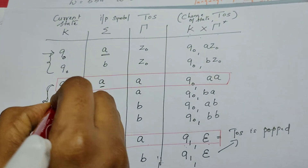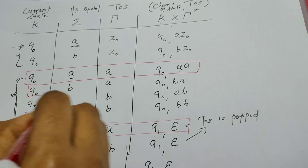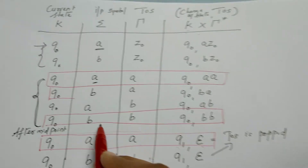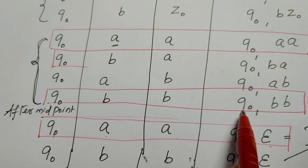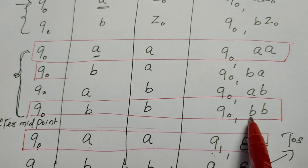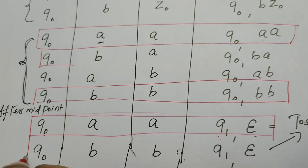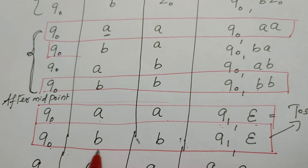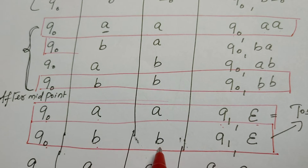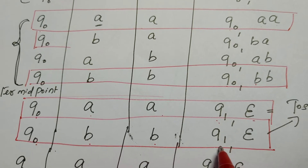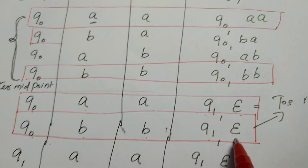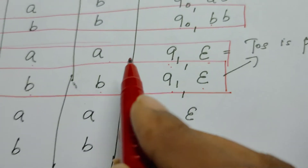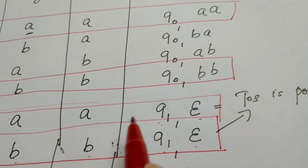Look into this rule: Q0, B, B. In this case the PDA continues to stay in Q0 by pushing one more 'b' onto the top of the stack. Now look into this rule — the situation is the same: Q0 reads B, top of stack is B, but it reacts differently. It changes the state to Q1 and replaces the top of the stack with epsilon. The situation is the same but the PDA has two choices.